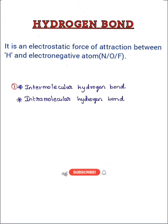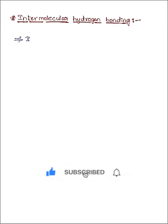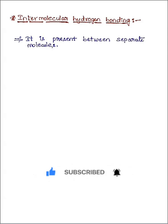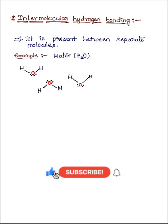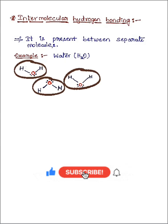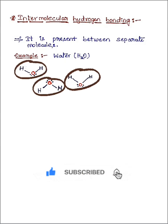The two types are intermolecular hydrogen bonding and intramolecular hydrogen bonding. Let's go with the first one: intermolecular hydrogen bonding. Intermolecular hydrogen bonding is present between separate molecules. The prefix 'inter' means between two groups. We take water as an example — each water molecule has hydrogen covalently bonded to oxygen.